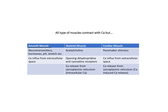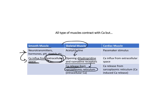In smooth muscle, which is stimulated via neurotransmitters, hormones, pH, stretch, and more, the stimulus causes calcium influx from the extracellular space. In skeletal muscles, the stimulus is acetylcholine, which causes opening of dihydropyridine and ryanodine receptors, leading to calcium release from the sarcoplasmic reticulum. The sarcoplasmic reticulum is found inside the cell, so calcium comes from the intracellular side — not from the extracellular space like in smooth muscle. Skeletal muscle uses intracellular calcium.